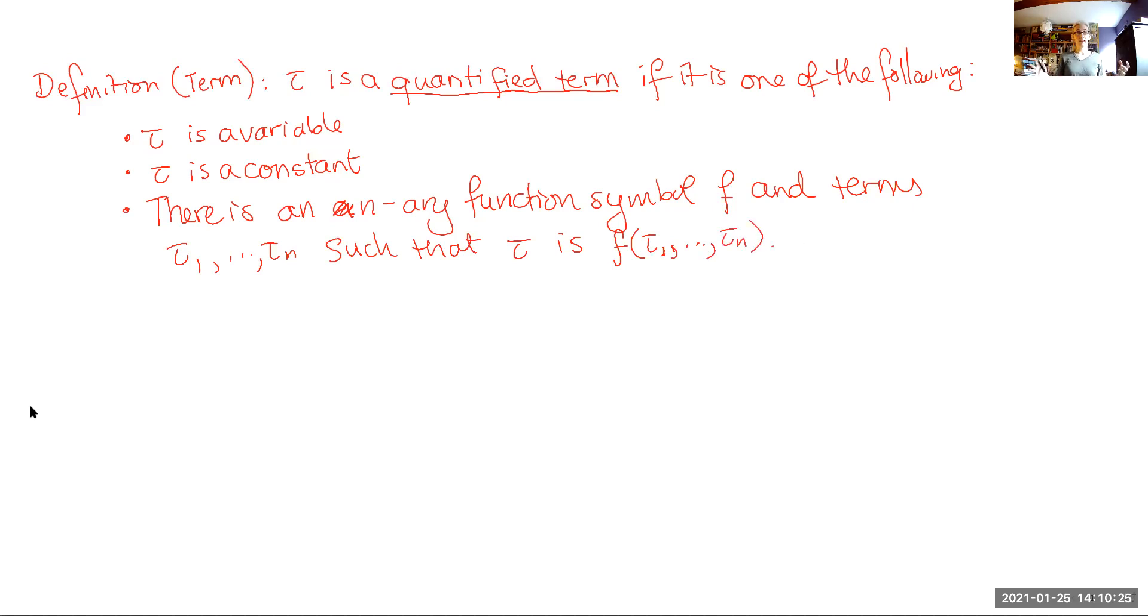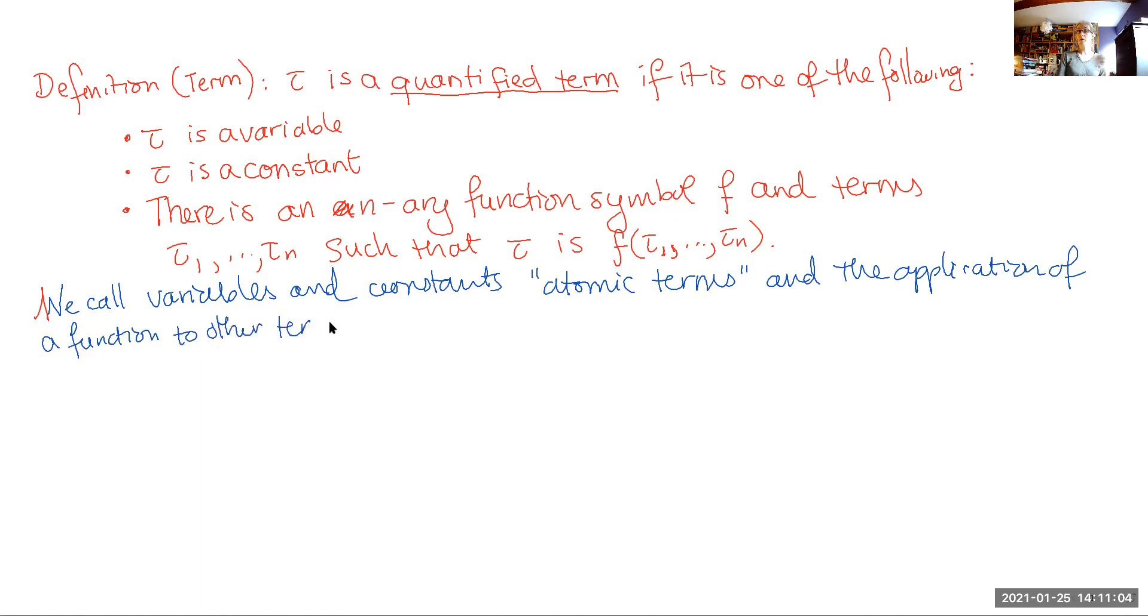That's all that there is to the definition of term. However, a little bit of nomenclature: we call variables and constants atomic terms, and the application of a function to other terms, which may be atomic or may not be, we call that complex terms.